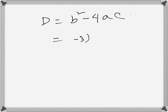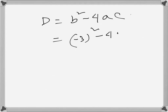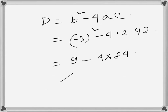Here b is minus 3, so we have (minus 3)² minus 4 times a, which is 2, times c, which is 42. So this is 9 minus — this is already 42 times 2 times 2, which is 84, then times 4.